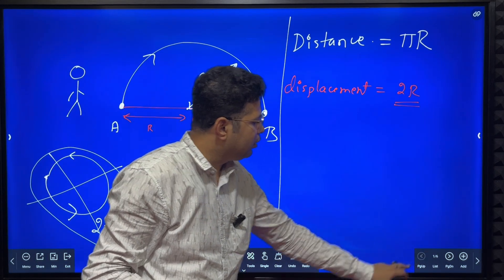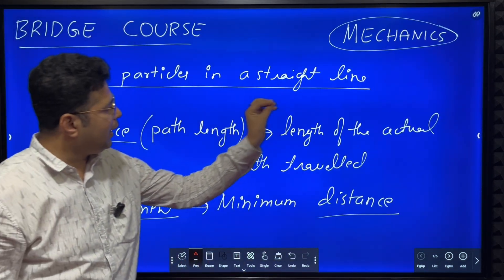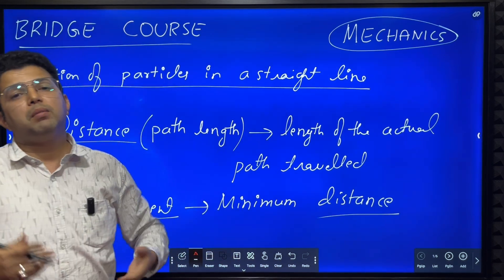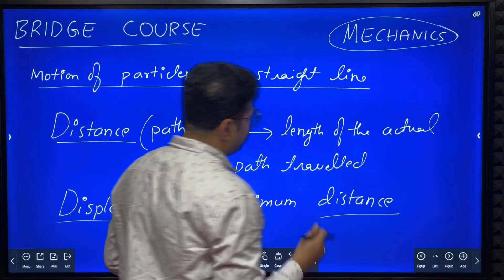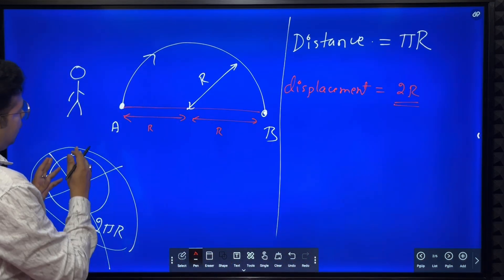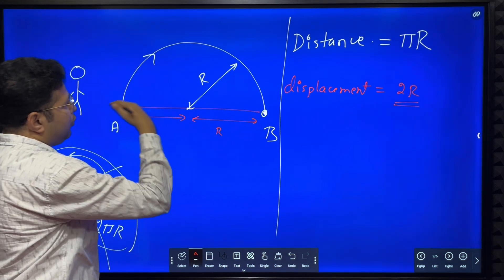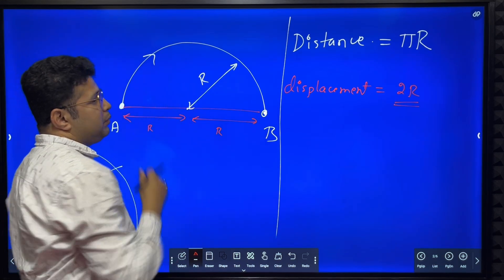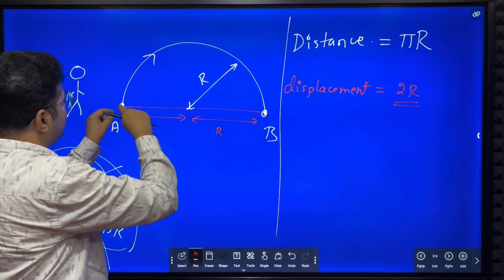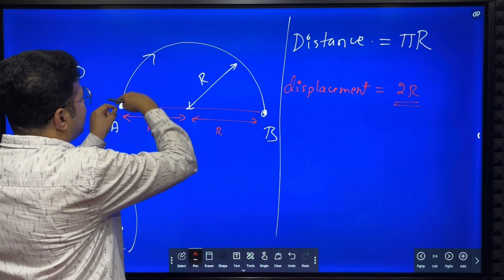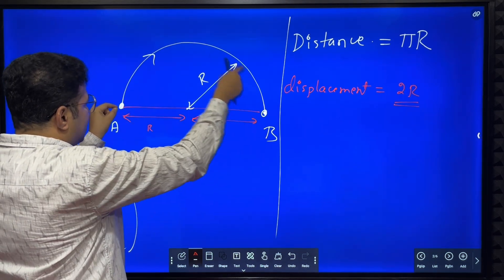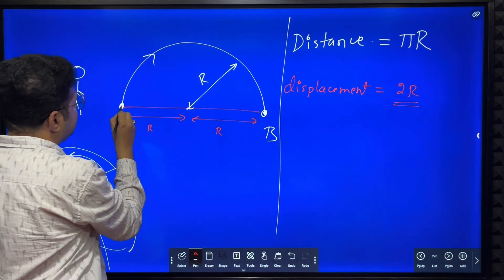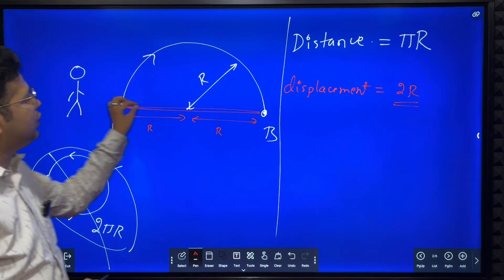So to summarize: distance means length of the actual path traveled — in this example, πr. Displacement means the minimum distance between two points — in this example, 2r, which is the diameter. If you travel in a straight line from A to B, that minimum distance is 2r.